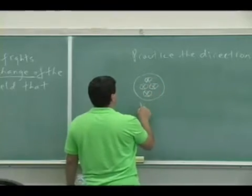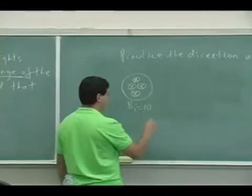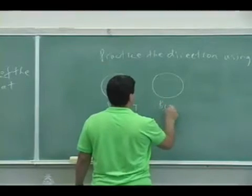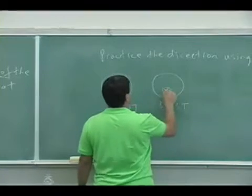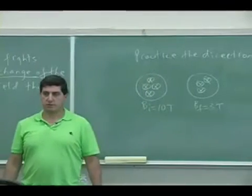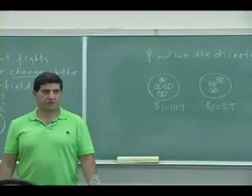Initially, the initial is 10 Teslas into the board. B final is 3 Teslas into the board. Tell me what's the direction of the induced current.